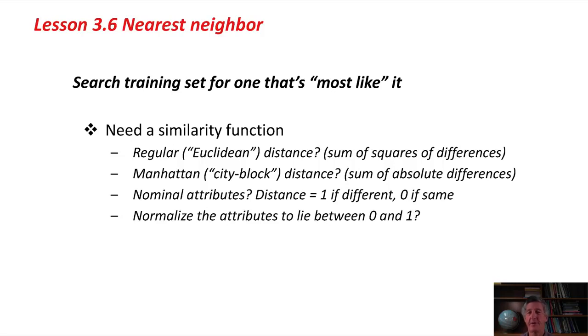Of course, I've been talking about numeric attributes here. If attributes are nominal, we need the difference between different attribute values. Conventionally, people just say the distance is 1 if the attribute values are different, and 0 if they are the same. It might be a good idea with nearest neighbor learning to normalize the attributes so that they all lie between 0 and 1, so the distance isn't skewed by some attribute that happens to be on some gigantic scale.